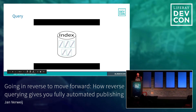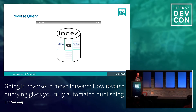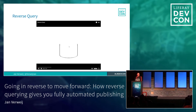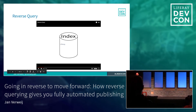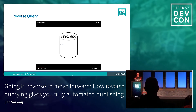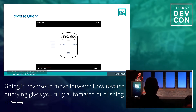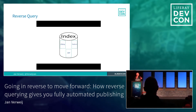So next, let's look at how a reverse query works. We also start with an index, but instead of storing documents, we start storing words or queries — like 'LiveRay', 'DXP', or 'Platform'. Then the next step is to take your content and send it to the reverse query engine to find matches. So it's the other way around. The queries or terms are stored there forever, and the documents are more or less dynamic.